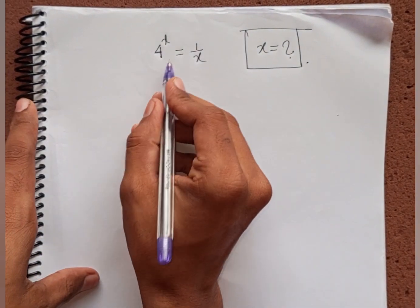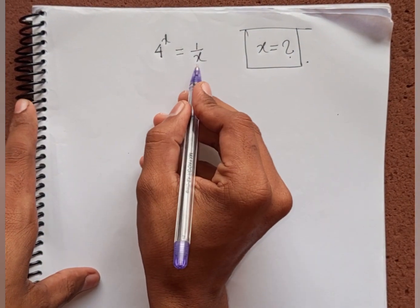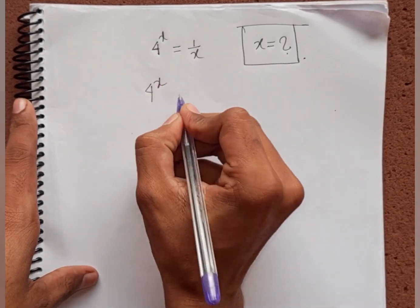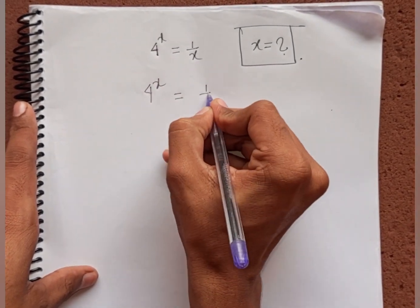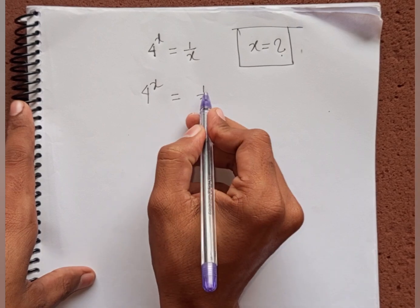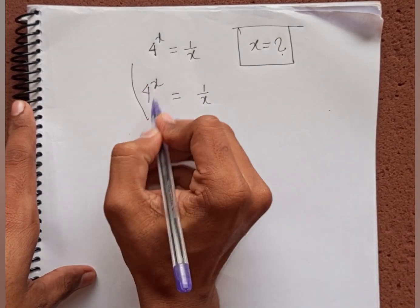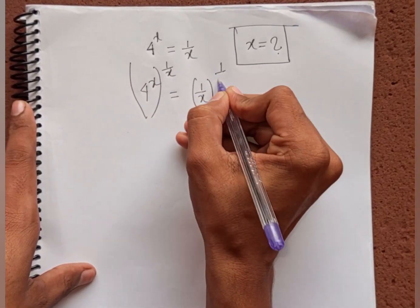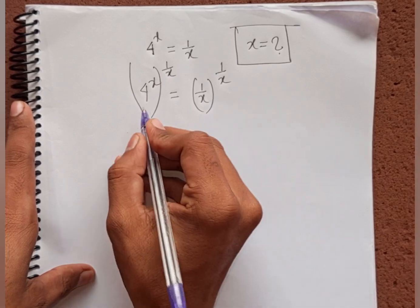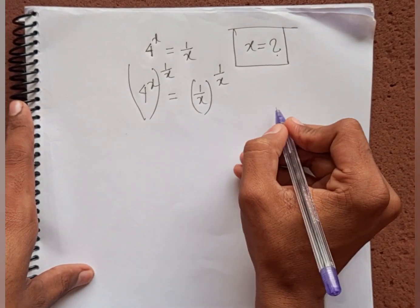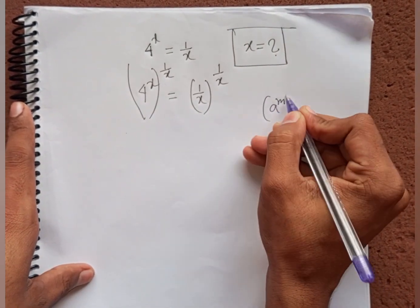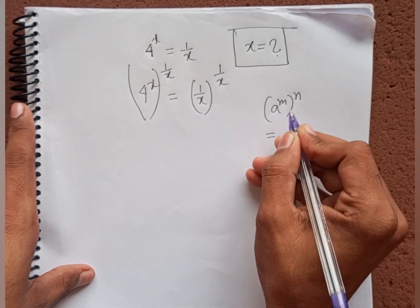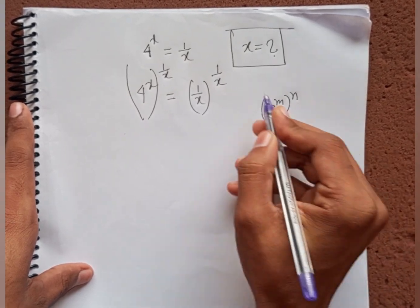New problem: 4^x = 1/x. Find the value of x. We multiply both sides by the power of 1/x, and apply the formula (a^m)^n = a^(mn).